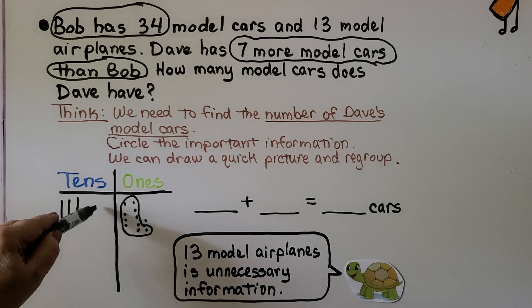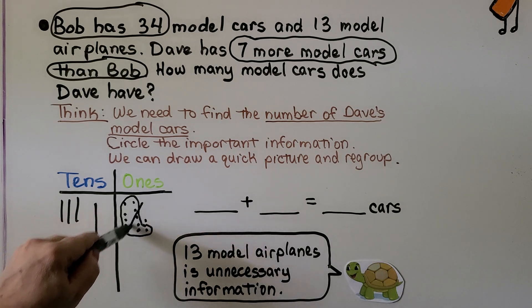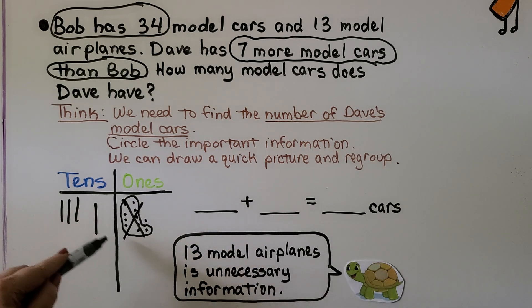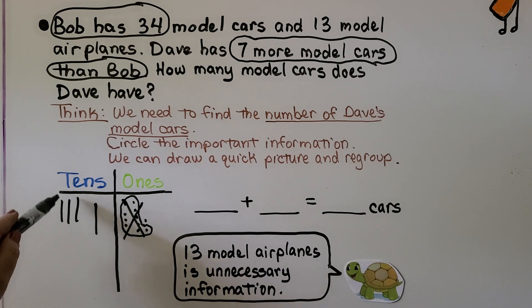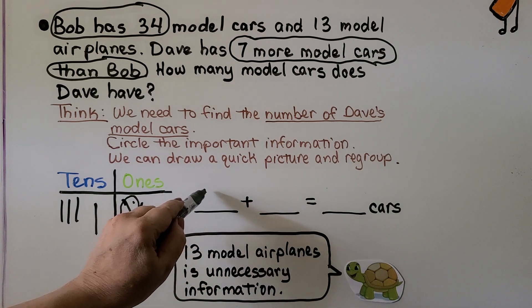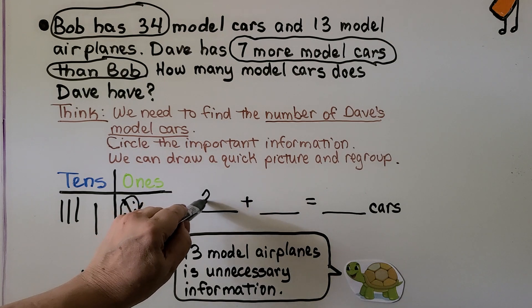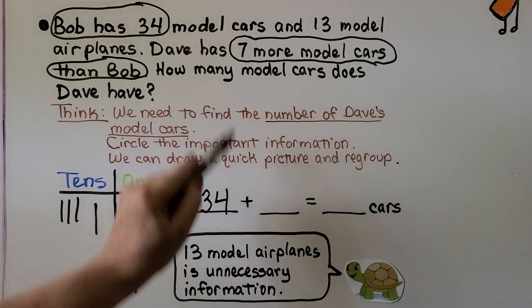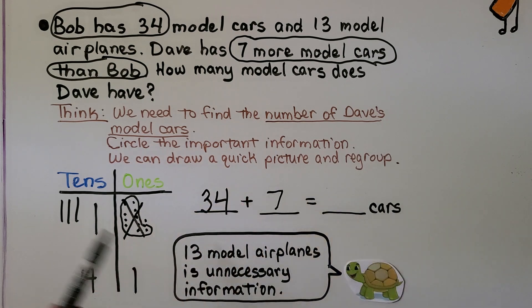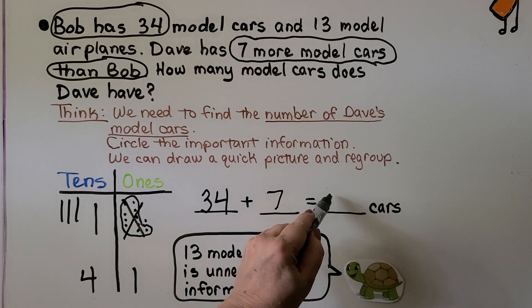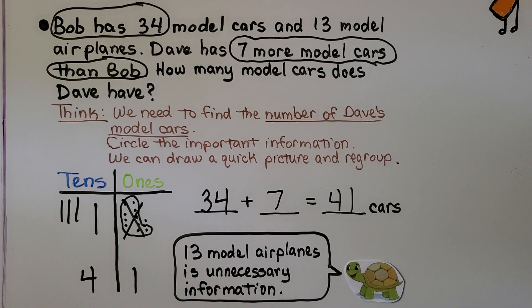Now we have a 10 we can put over here. We can cross this out because now we moved it over here and we have one, two, three, four tens. So there's four here and we have one one. So 34 plus seven more is how many Dave had. It's four tens, one one. That means 34 plus seven is 41 cars.